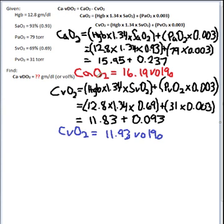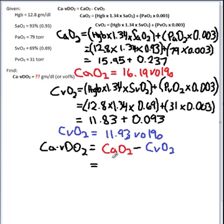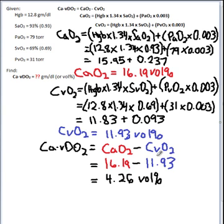So now I calculate the AV content difference by subtracting the 16.19 arterial, subtracting the venous of 11.93 from that. So there's my formula, and then plugging in my results from above, I subtract 11.93 from 16.19, and I get a result of 4.26 volumes percent.